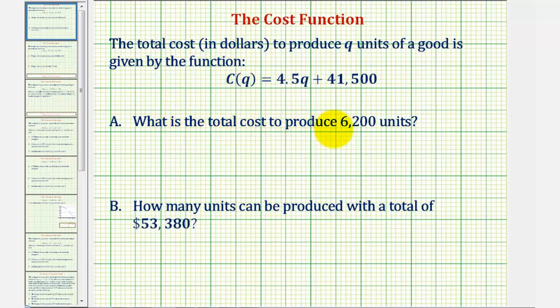What is the cost to produce 6,200 units? So 6,200 would be our input, or the value of q. To find the total cost, we want to find C(6,200).